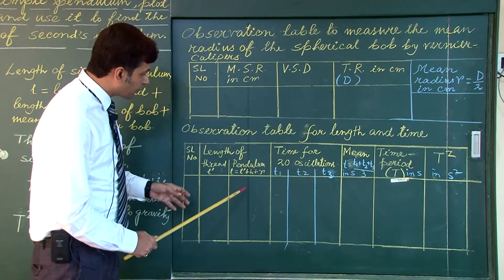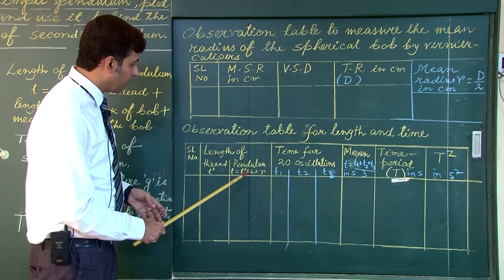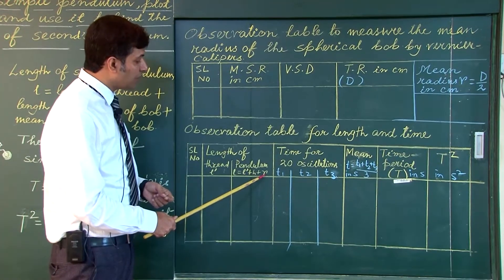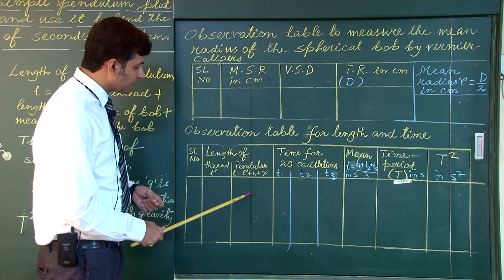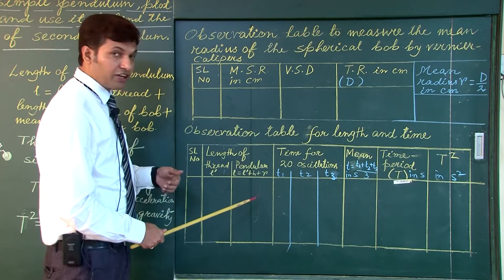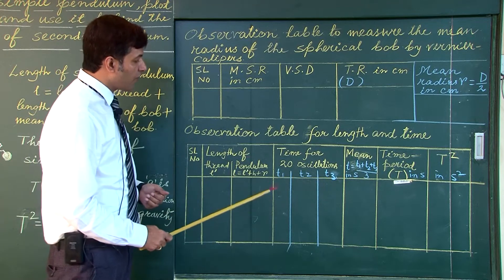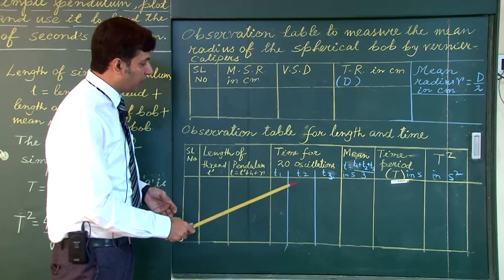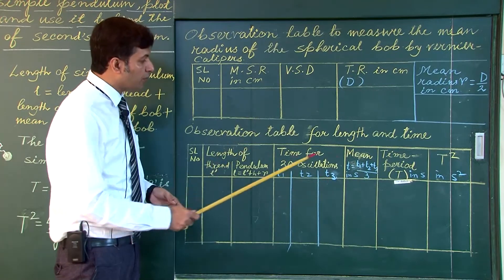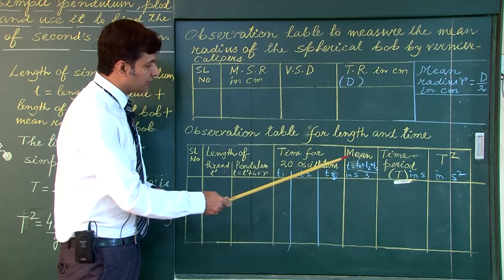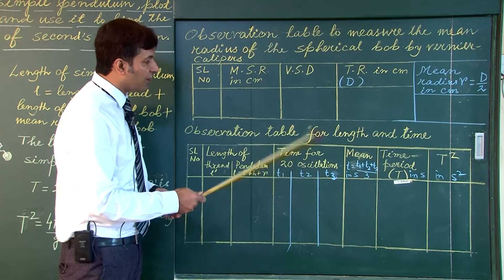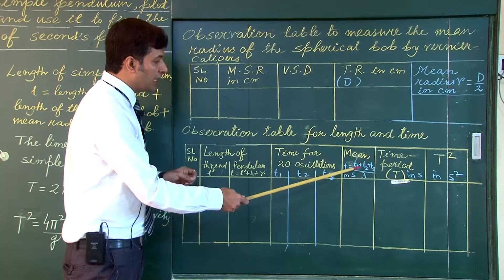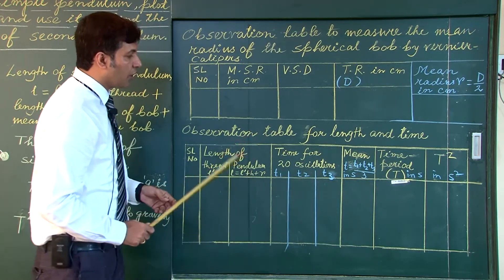We will be varying the length of the pendulum. The effective length is l-prime plus h plus r. We vary the length from 100 centimeter to 40 centimeter in intervals of 10 centimeters. For each length we find the time for 20 oscillations, measured 3 times for better accuracy, and take the average. The average time for 20 oscillations divided by 20 gives the time period, and then we take the square of it.